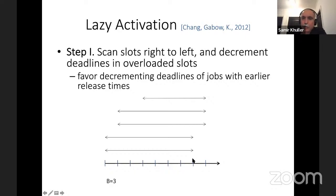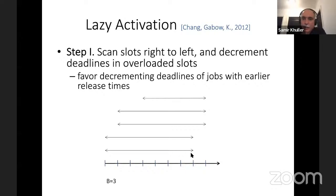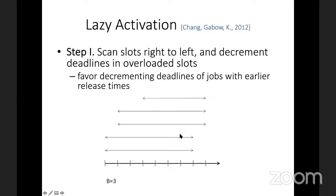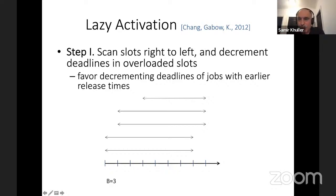This may cause another problem. Maybe in the previous time slot, there were already two jobs with that earlier deadline. Now after moving the two jobs, there are suddenly four jobs with that deadline. So we apply this strategy from right to left recursively. With four jobs, we again ask which three have the latest release time, keep those, and subtract one from the deadline of the other. We do a sweep over all jobs from right to left, ensuring that at most B jobs have a common deadline at all times.